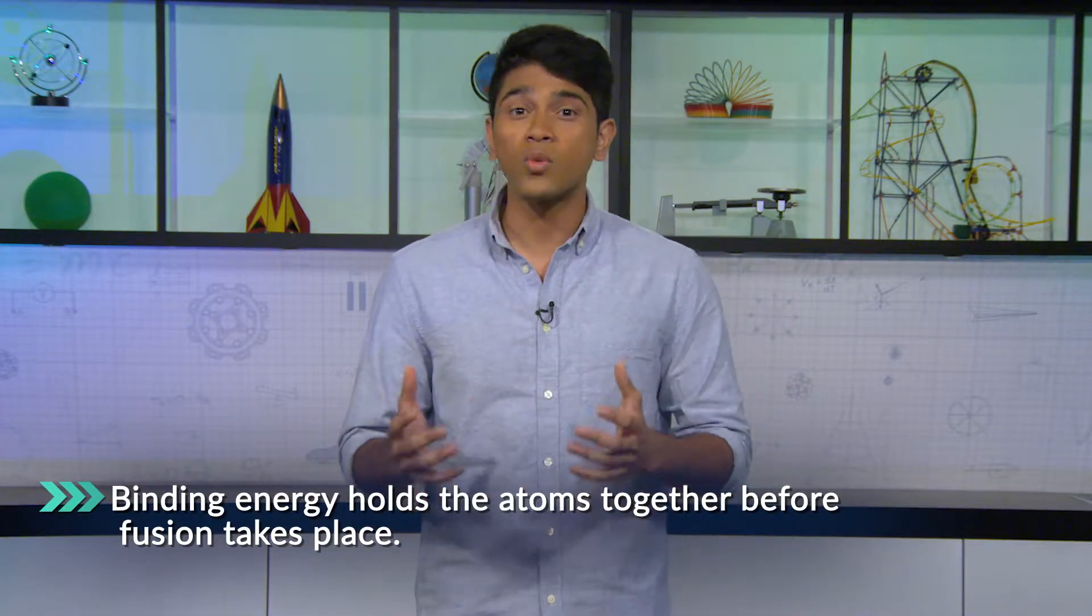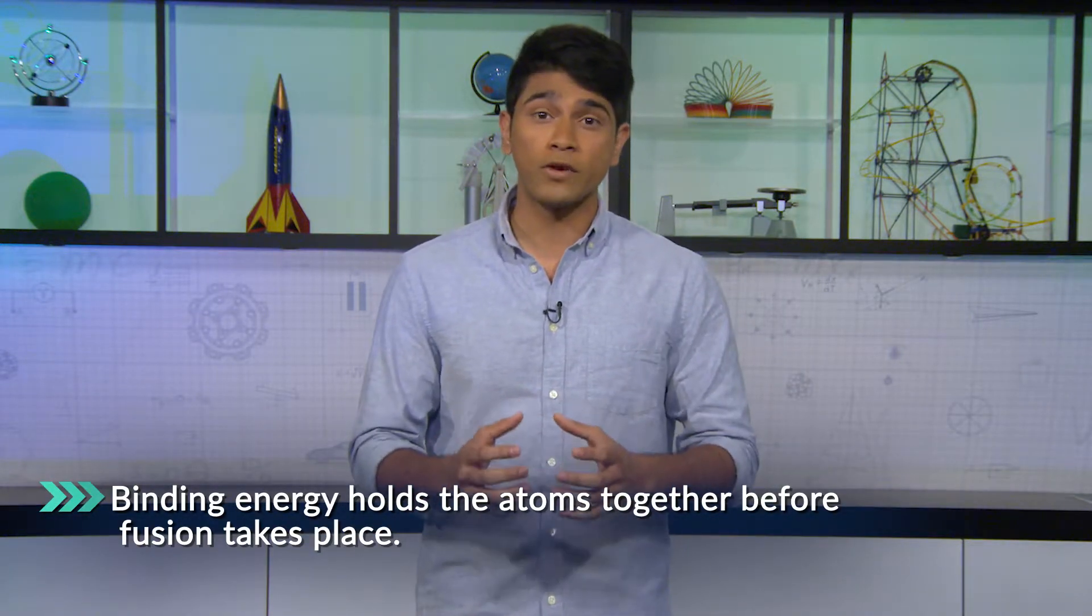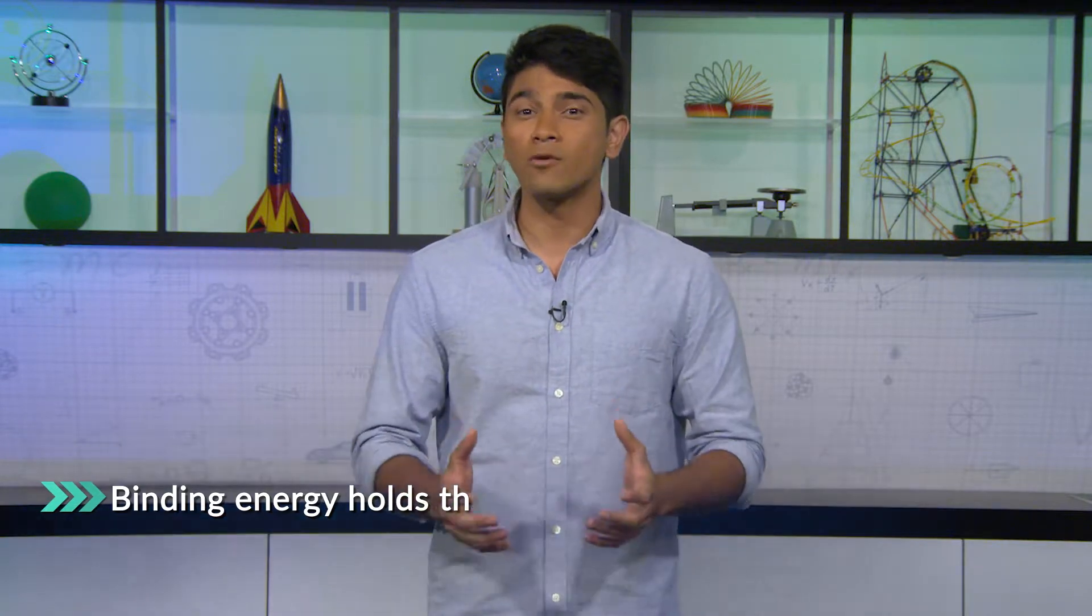This energy, known as the binding energy, was what held the atoms together before the fusion took place. To figure out how much mass goes to energy, we go back to Einstein's famous equation, E is equal to mc squared.